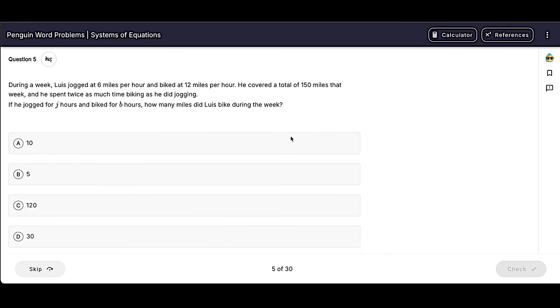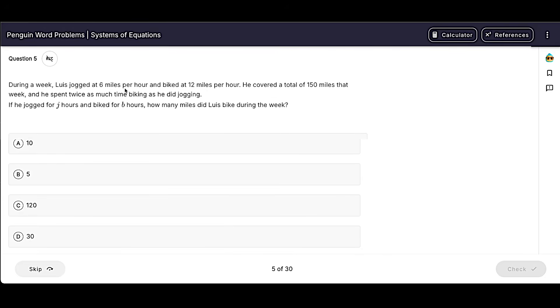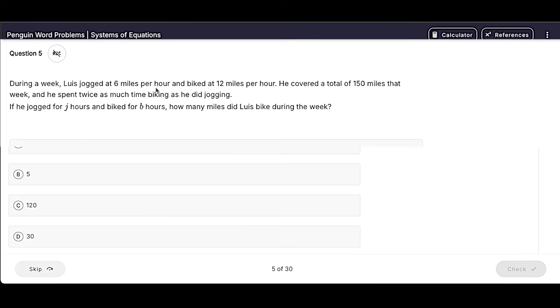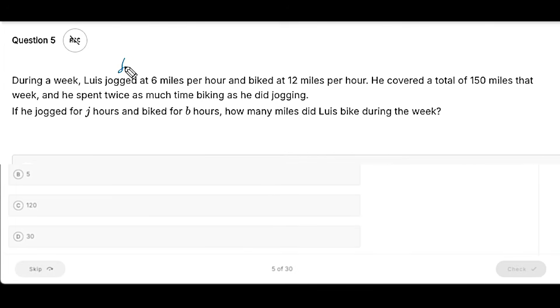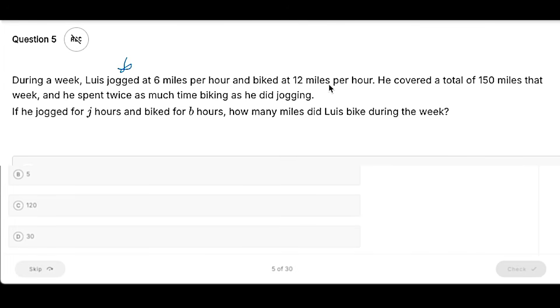Let me show you what I mean when I say comparison. So in the first sentence, we are getting basically one of those value equations. It says he jogged at 6 miles per hour. So we could say that jogging is X, so 6X. And biked at 12 miles per hour, so we could say biking is Y. And he covered a total of 150 miles. So again, value plus value equals value.